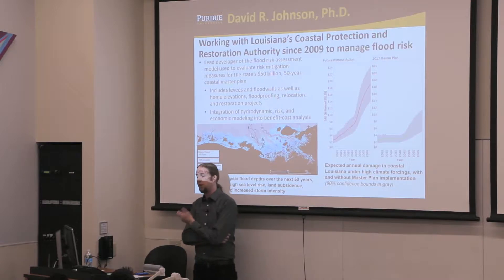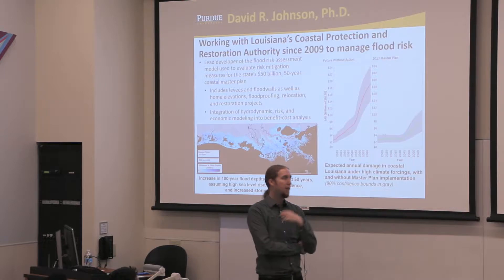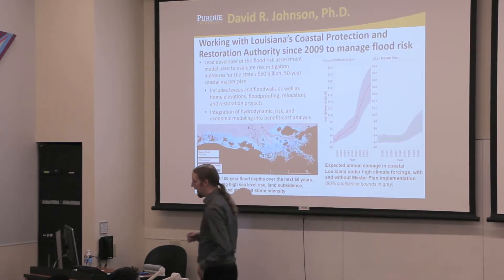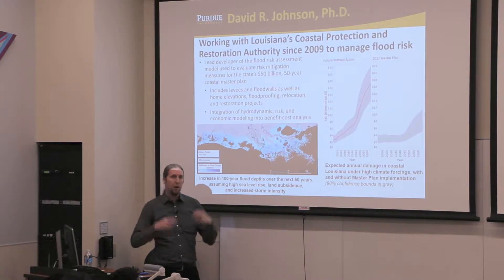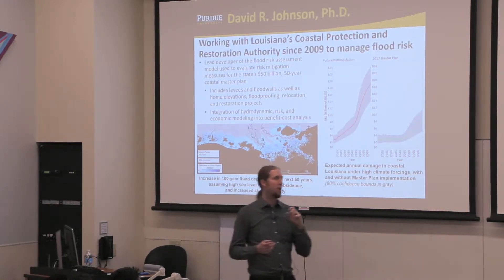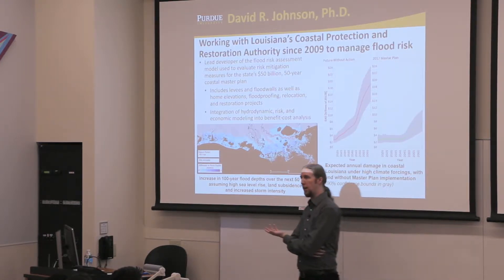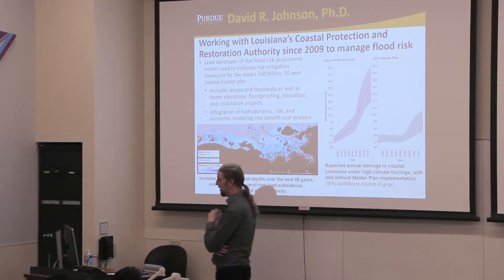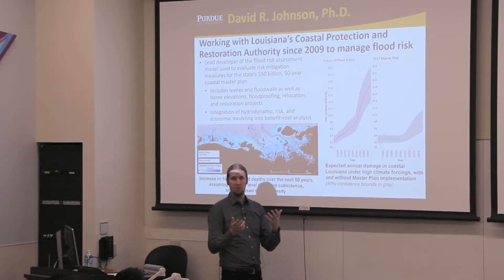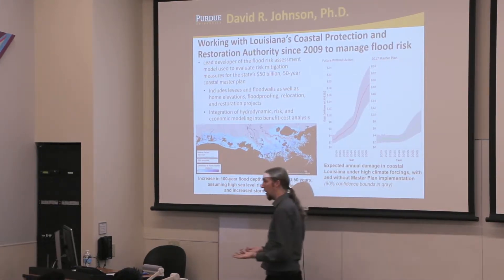For the master plan work, this is a 50-year, $50 billion plan that the state developed after hurricanes Katrina and Rita hit in 2005. It's designed to combine flood risk measures with other measures to prevent land loss and restore the wetlands in coastal Louisiana, balancing the competing objectives of reducing flood risk and restoring land.